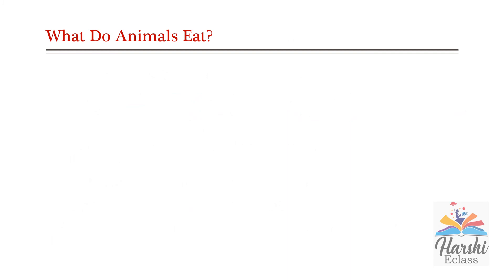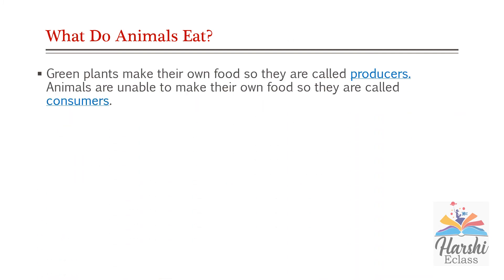Let's see what animals eat. Green plants make their own food, so they are called producers. Green plants prepare their own food with the help of the photosynthesis process, whereas animals are unable to make their own food, so they are called consumers.